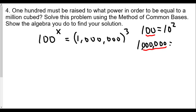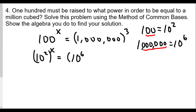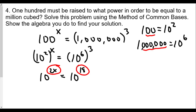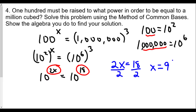Now we have 10 squared to the x power equals 10 to the sixth raised to the third. Since they have the same base, we multiply the exponents: the left side becomes 10 to the 2x, and the right side becomes 10 to the 18 (6 times 3). Setting the exponents equal: 2x equals 18, so dividing both sides by 2, x equals 9. Therefore, 100 raised to the 9th power equals one million cubed.